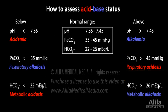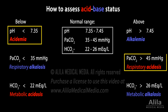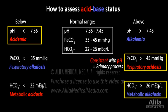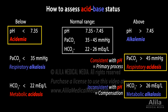For example, an ABG with a low pH, high PaCO2, and high bicarbonate indicates a respiratory acidosis with metabolic compensation.